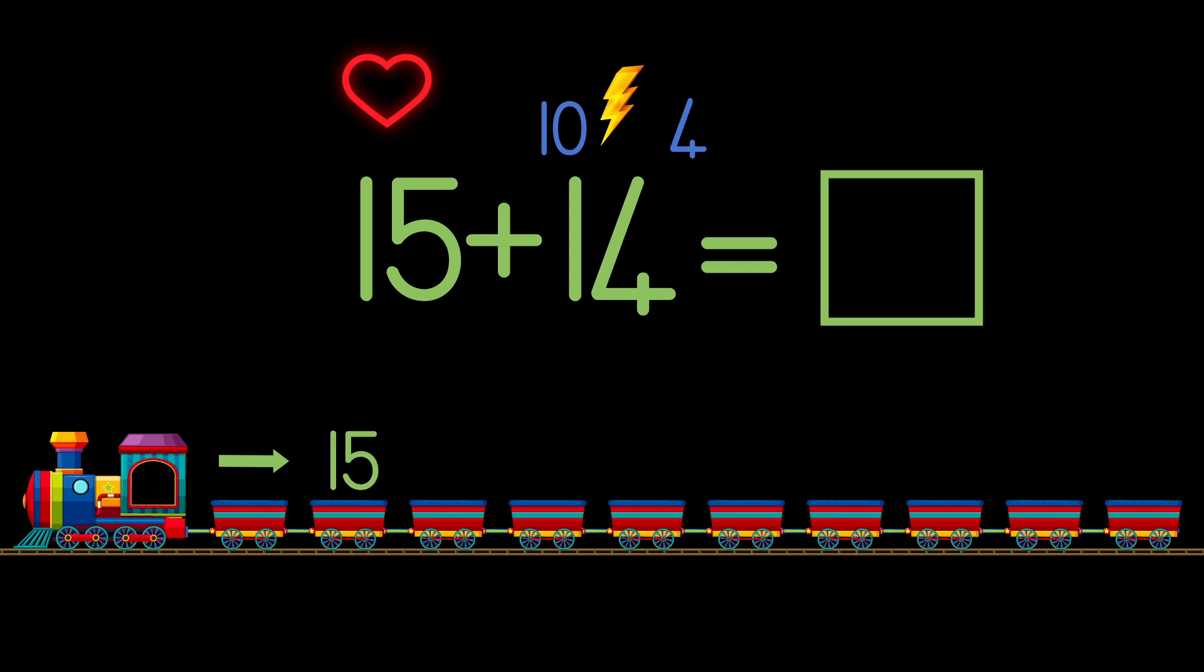Now we are going to add the second number, the one that we broke into two. But we are only going to add the first part, the 10. So we add plus because we are adding 10 next to our first number. 15 plus 10. Now we add another arrow as we are carrying on with our thinking.